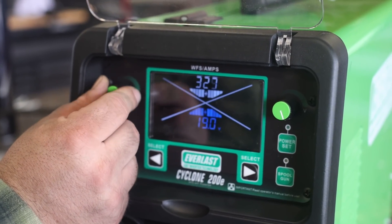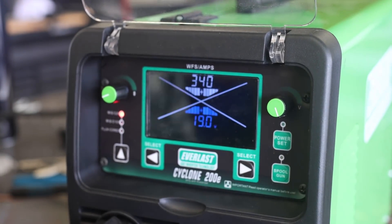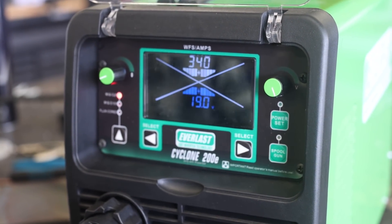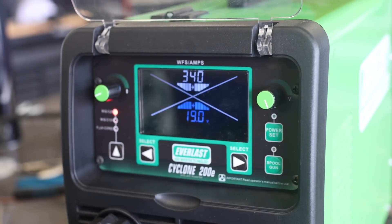All right guys, today we're using the Everlast Cyclone 200E. We're going to run 19 volts, 340 inches per minute wire feed speed. If I need to make a change I will, but I'm pretty confident in those numbers. We'll see if she slaps.